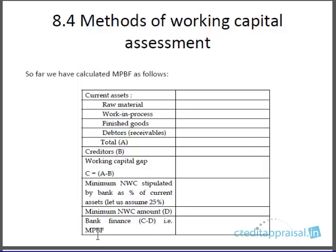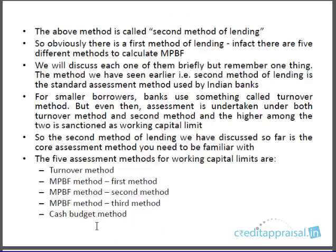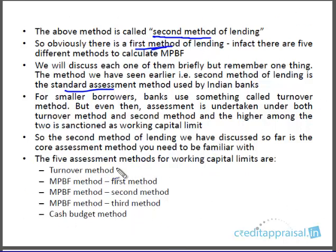The method we discussed in the previous segment is the second method of lending. But there are other methods. In total there are five different methods of assessment to calculate the MPBF. The second method is the most commonly used method in Indian banks — it is the most standard assessment method. For small borrowers, banks use something called the turnover method. Even for small borrowers, banks do assessment both under the turnover method and the second method of lending, and whichever is higher they sanction.